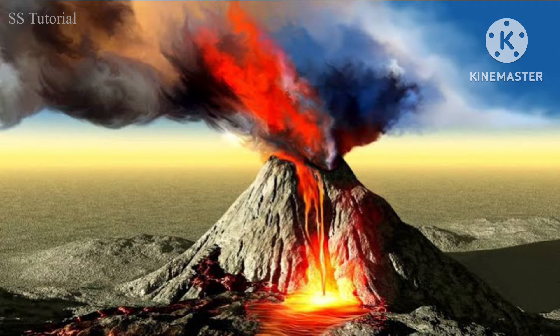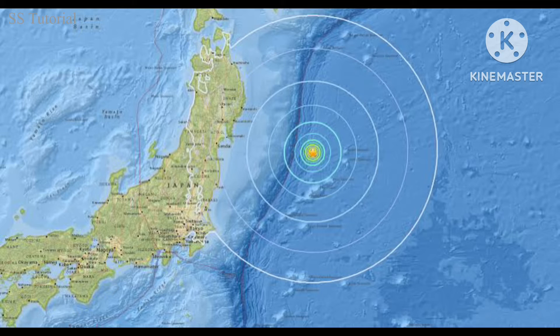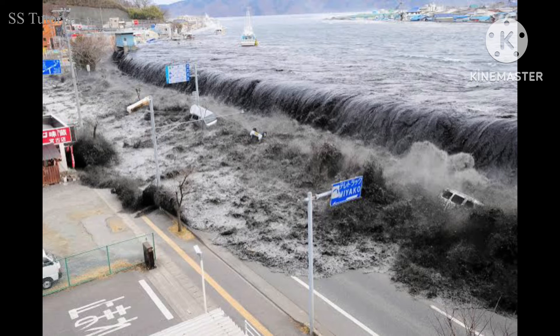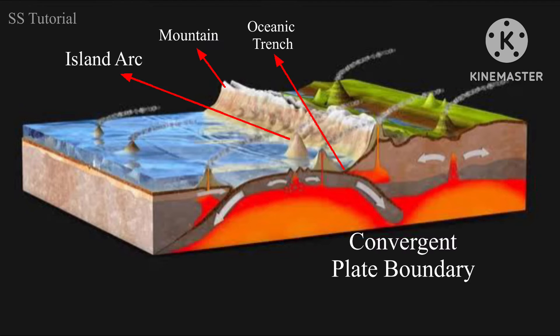At the convergent plate boundary, volcanic eruptions, earthquakes, and tsunamis are very common. Some geographical features like oceanic trenches, island arcs, and fold mountains can also be seen at convergent plate boundaries.